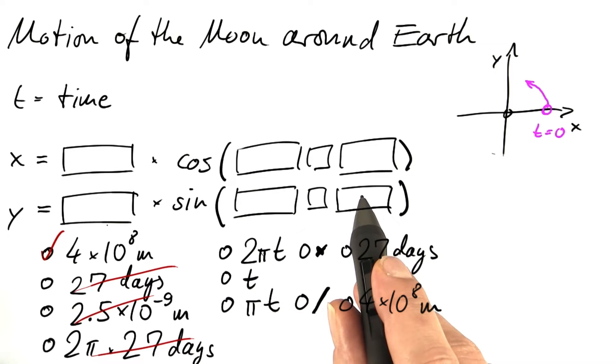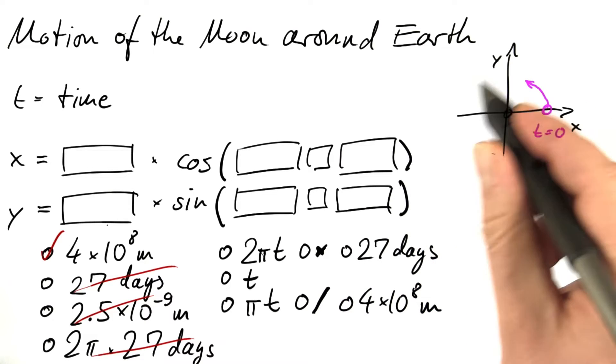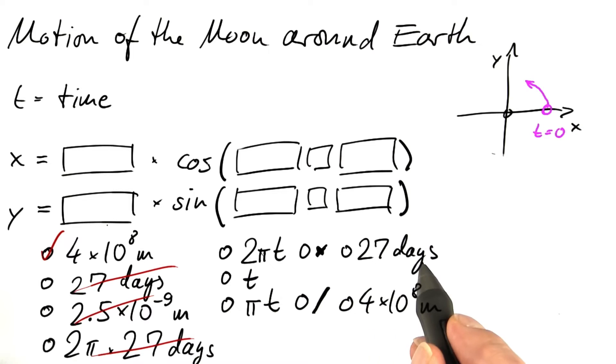This has to do with the period of the Moon's orbit. How long does it take the Moon to make one full orbit around Earth? 27 days.